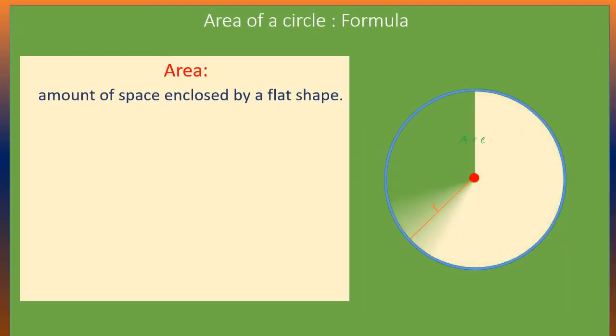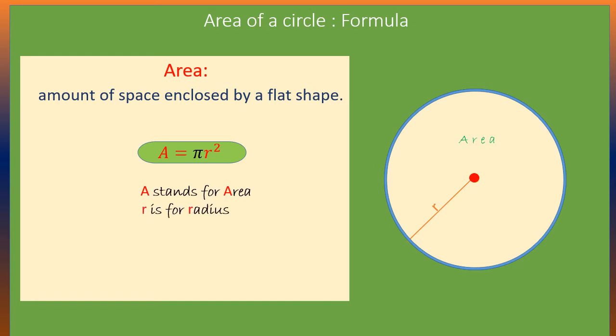To find the area of a circle, we use the formula A equals pi R squared. A stands for area and R is for radius. Pi is a constant number which we sometimes take to be either 22 over 7 or 3.14.